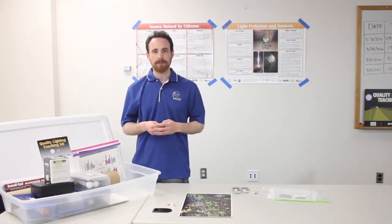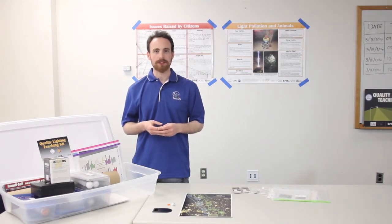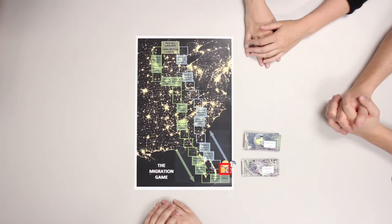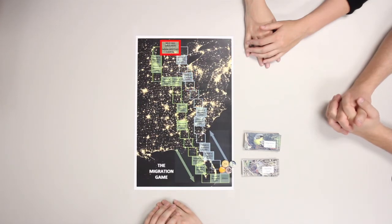Now that we understand the basics of the game, let's try a playthrough in order to get a better idea of how it actually works. Players begin the game by placing their button on the blue start square. Blue squares represent the northbound migration from the Bahamas to the nesting grounds in the lower peninsula of Michigan. The yellow area represents the nesting grounds in Michigan. Green squares represent the southbound migration back from the nesting grounds to their home in the Bahamas.